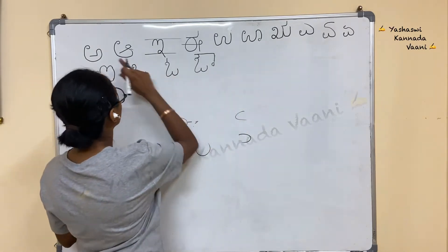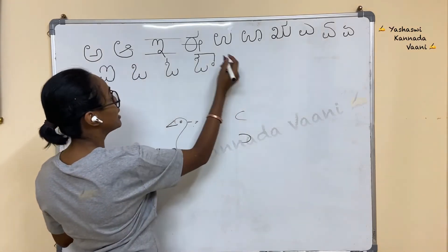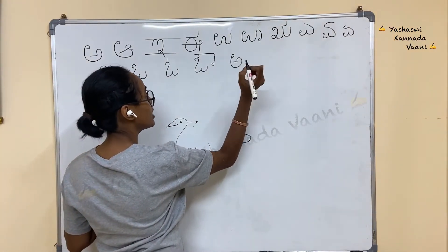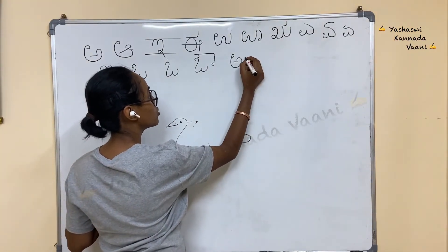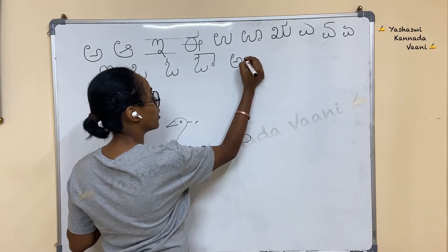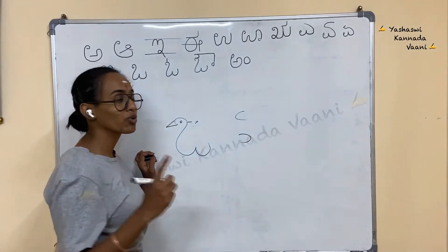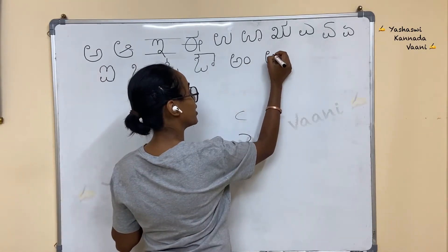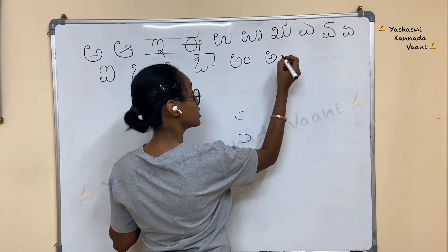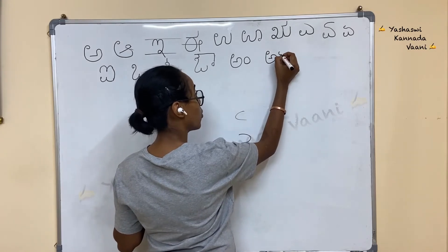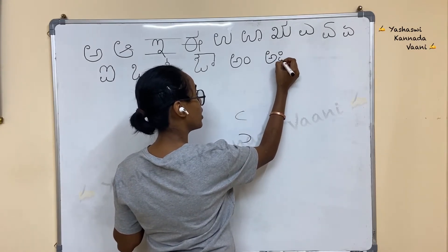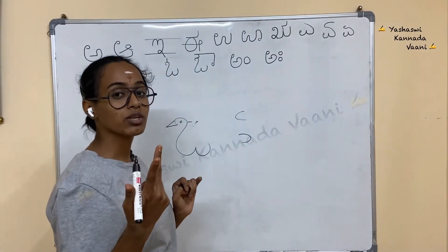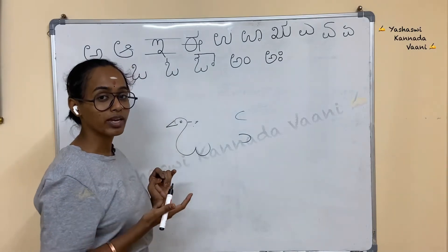Next, Am (ಅಂ). Remember letter A with one zero — one du sonne. Am — one zero. Again write A with two zeros — one up and one down. Yer du sonne — two zeros.